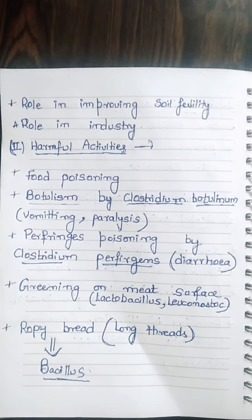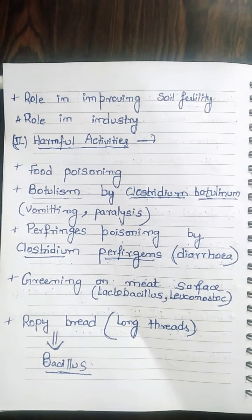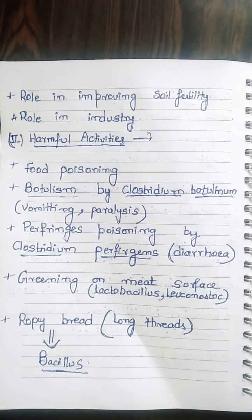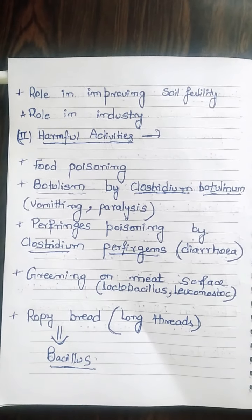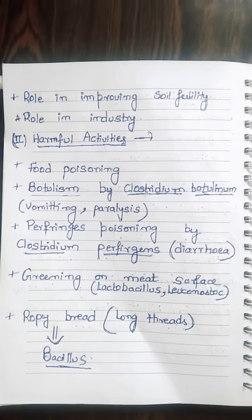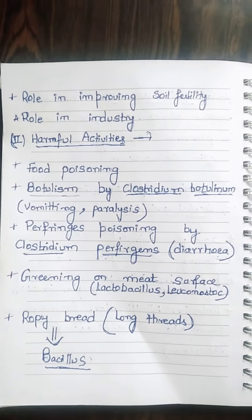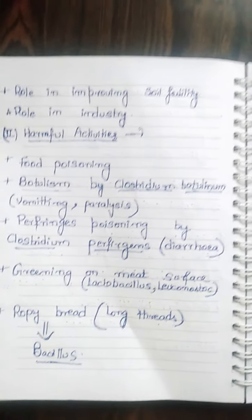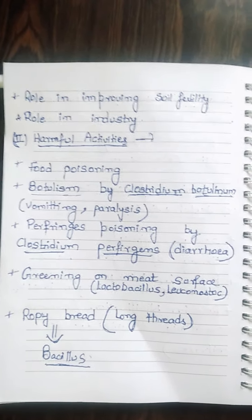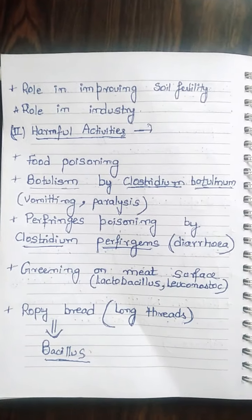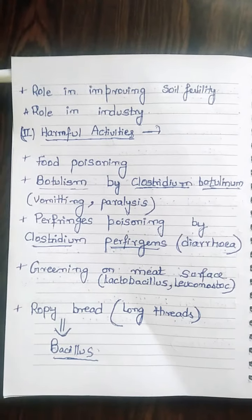Useful activities also include role in industry. Harmful activities include food poisoning and botulism, which is caused by the bacteria Clostridium botulinum. This disease is characterized by vomiting and paralysis.